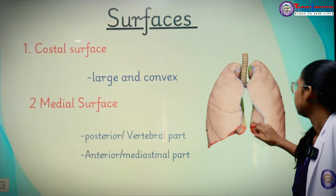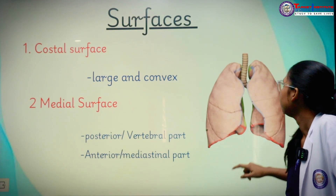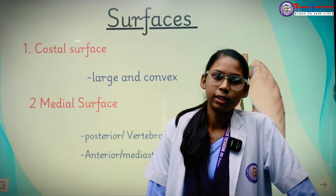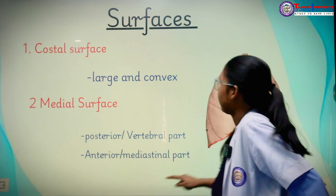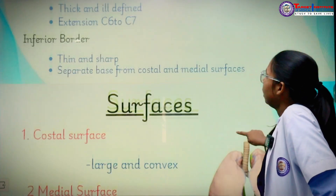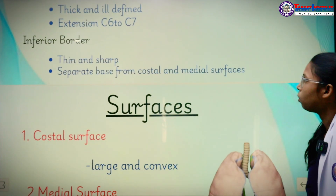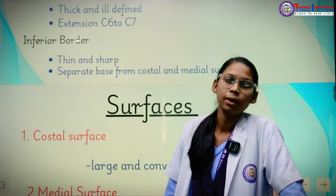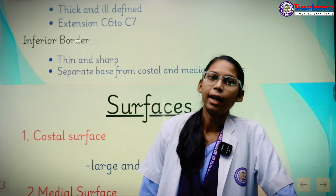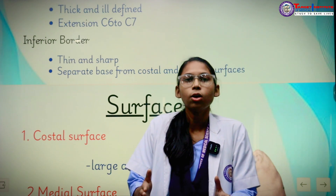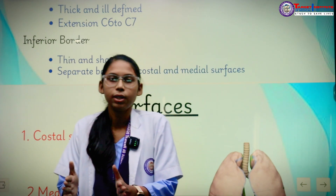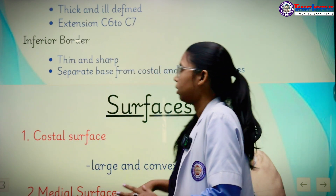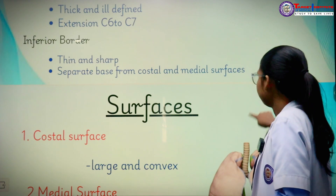The posterior border extends from the cervical seven spine to thoracic ten. The inferior border is sharp and thin, and it separates the costal surface and the medial surface from the base of the lungs.